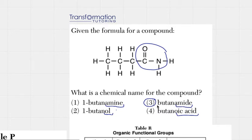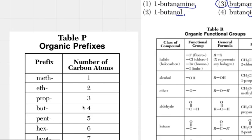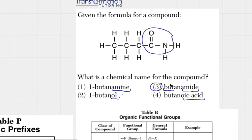How do we know that it has to be bute? That represents the number of carbons in the longest carbon chain. So here we have one, two, three, four carbons. And if we look at table P, if we have four carbons, the prefix must be bute. That's why this is called butanamide. We didn't really need to know that because all of the prefixes here are bute, but this is just for your future reference.